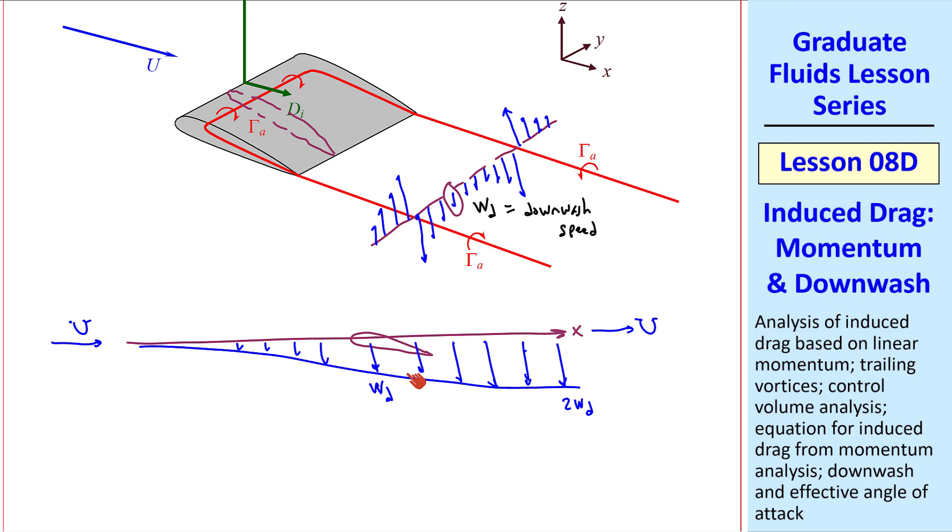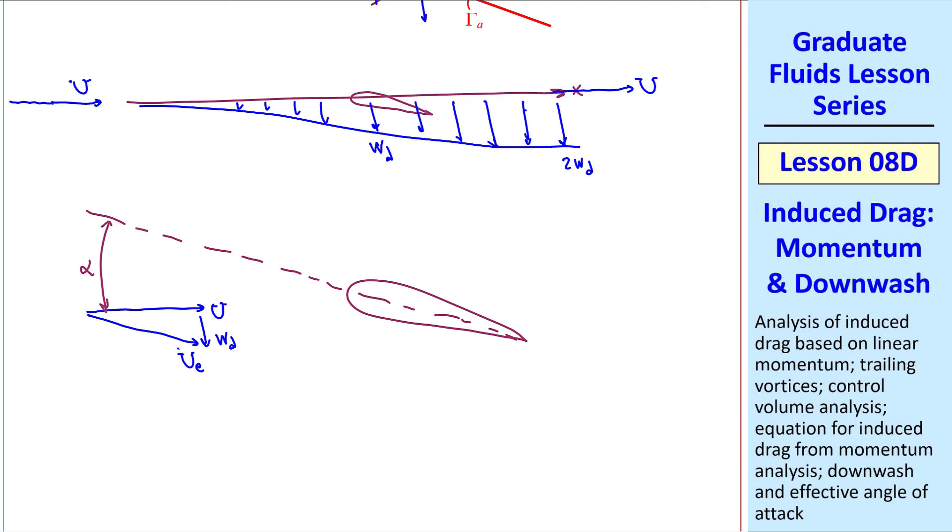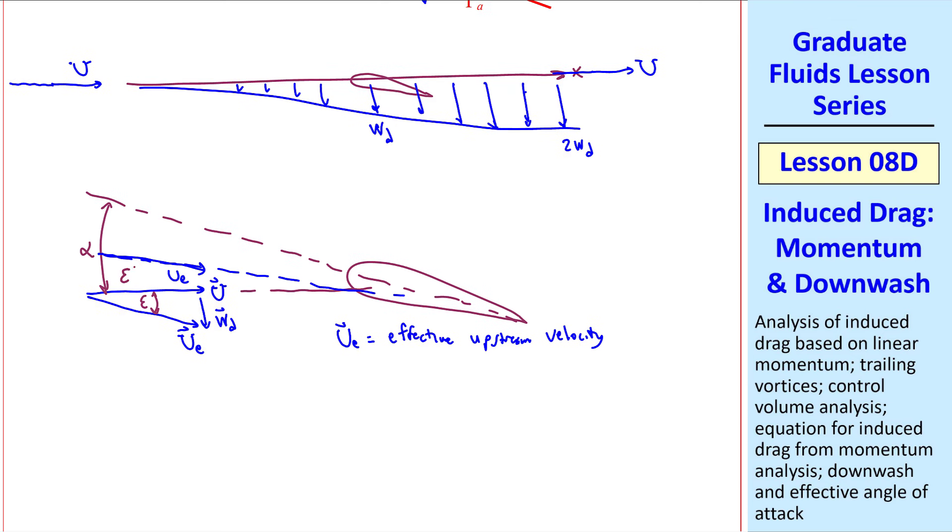Qualitatively, this airfoil is experiencing a downwash. In other words, the flow is not only going in the x-direction, but also downward, and the downwash is a much smaller vector than capital U. So because of this downwash, the airfoil experiences or feels an effectively smaller angle of attack. Let me sketch this more clearly. This is our airfoil. With speed U coming from the left, the actual angle of attack is alpha, but because of the downwash, the effective velocity hitting the airfoil is angled somewhat downward. We'll call this angle epsilon, where Ue is the effective upstream velocity, what the airfoil actually feels, and thus the effective angle of attack is reduced by angle epsilon. We'll let alphae be the effective angle of attack.